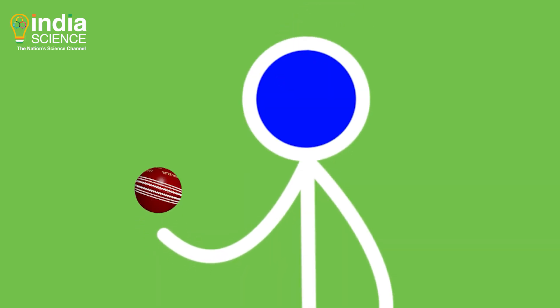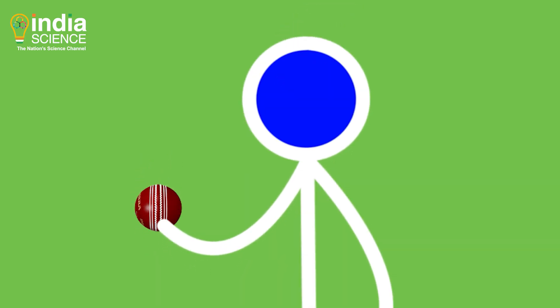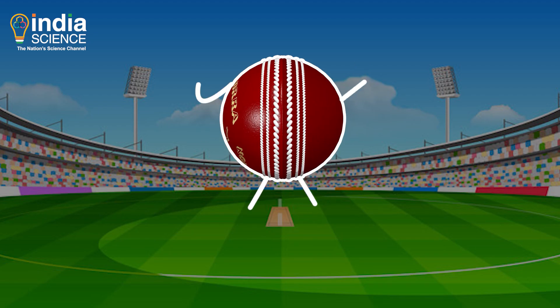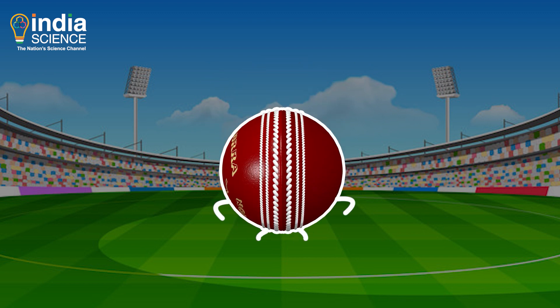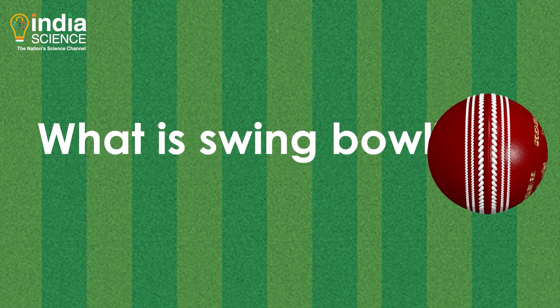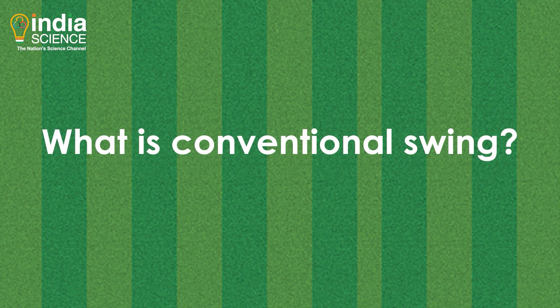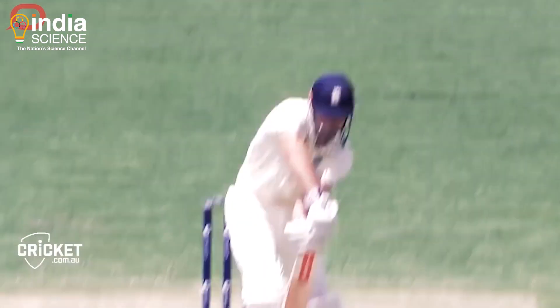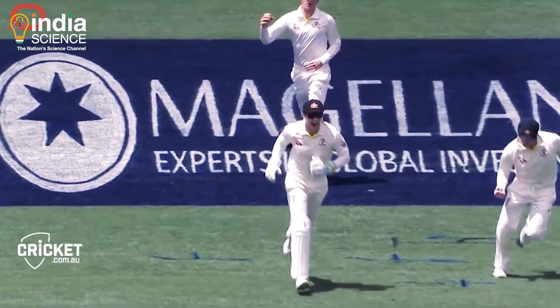Fast bowlers in cricket know how to make the ball dance, and sometimes they even make the batsman dance. This swinging ball is a nightmare for batsmen. But what is swing bowling? What is conventional swing? What is reverse swing? Bowlers might know this art quite well, but do you know there is a lot of hidden science behind it? Watch this video till the end to know all about it.